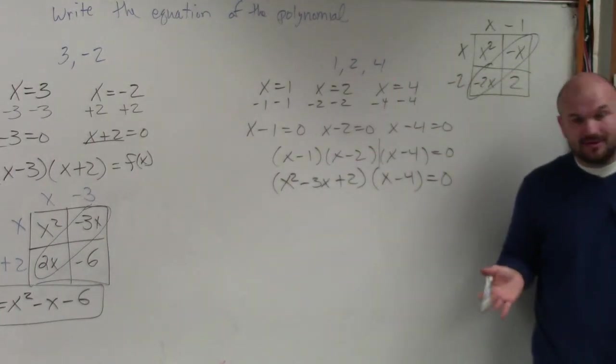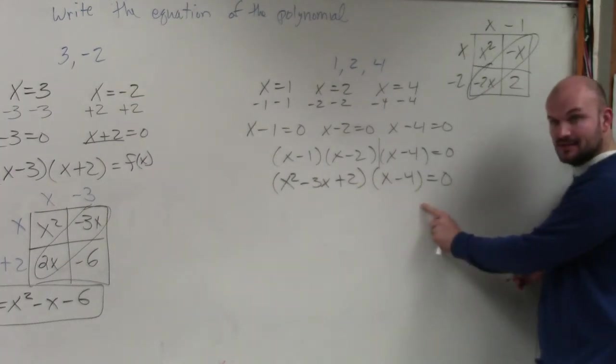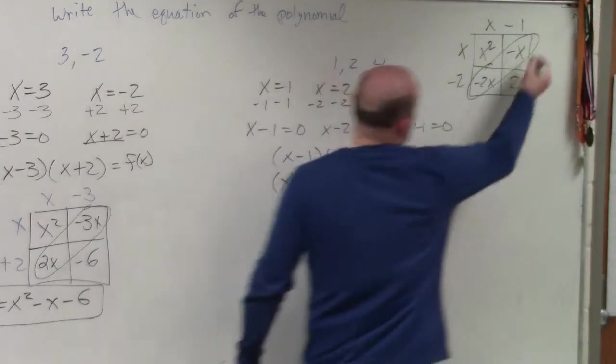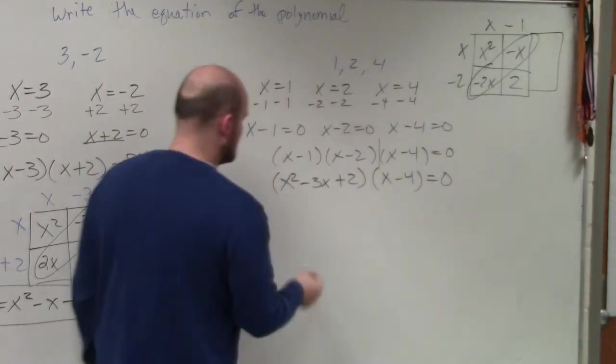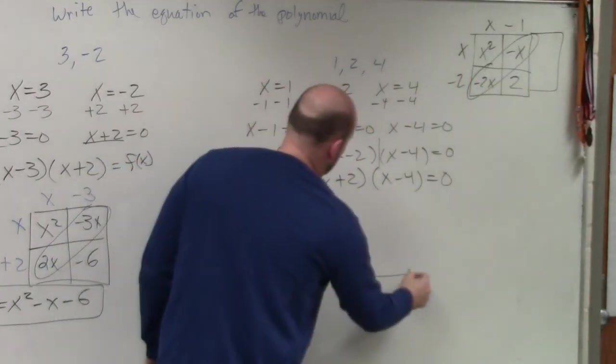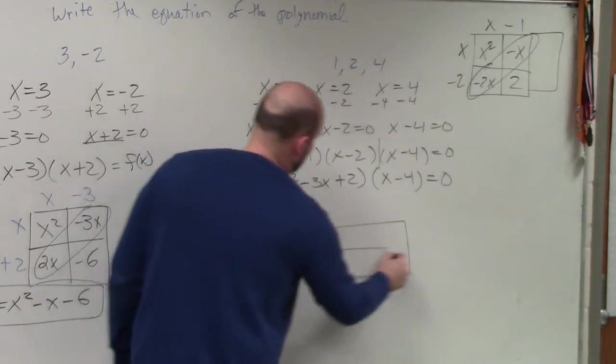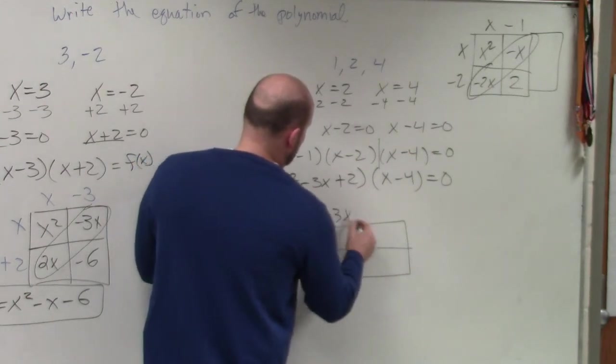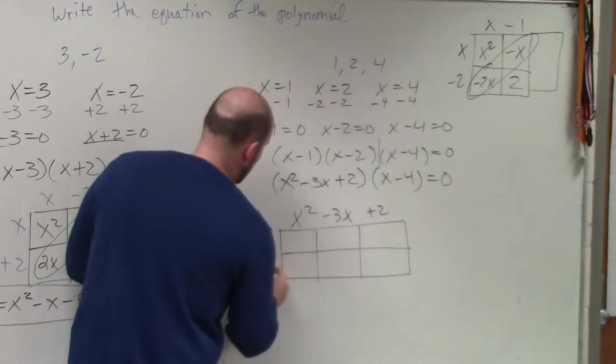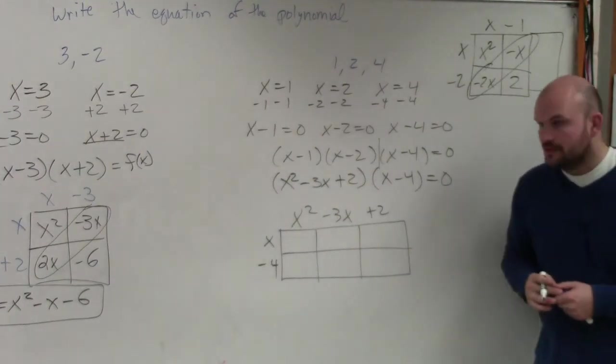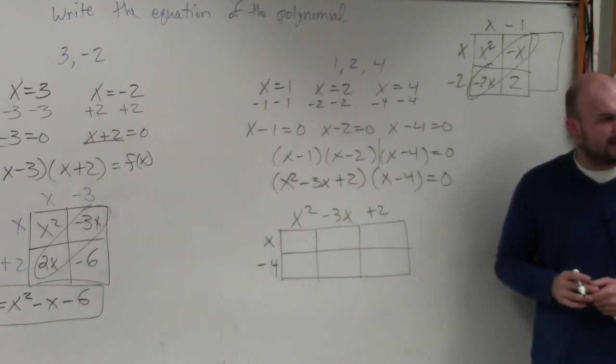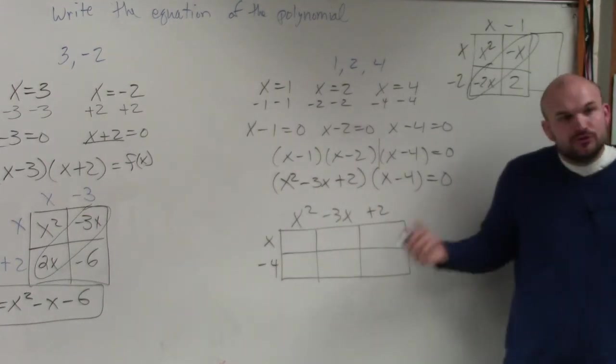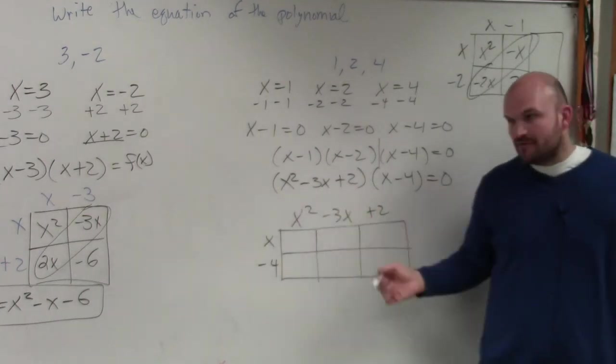So now, the last step is now we've got to multiply this by this. So using this box method, now I'm just going to add an extra row or an extra column. I will be moving back over. I've got to be able to write this over. So I write this as x squared minus 3x plus 2, and then x minus 4. Does everybody see how I created that? All I did is instead of having a binomial, I had a trinomial. So I just add an extra column.